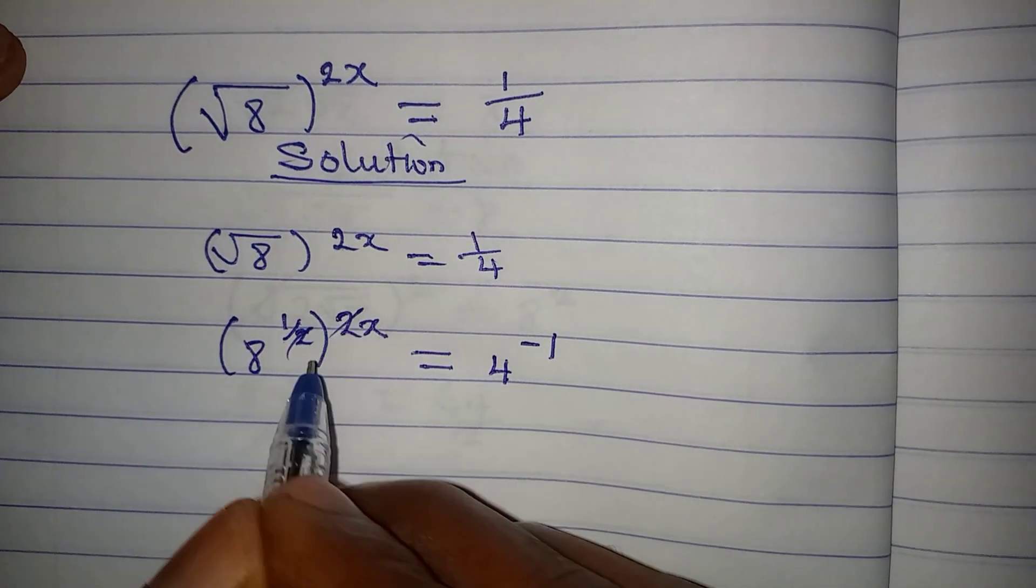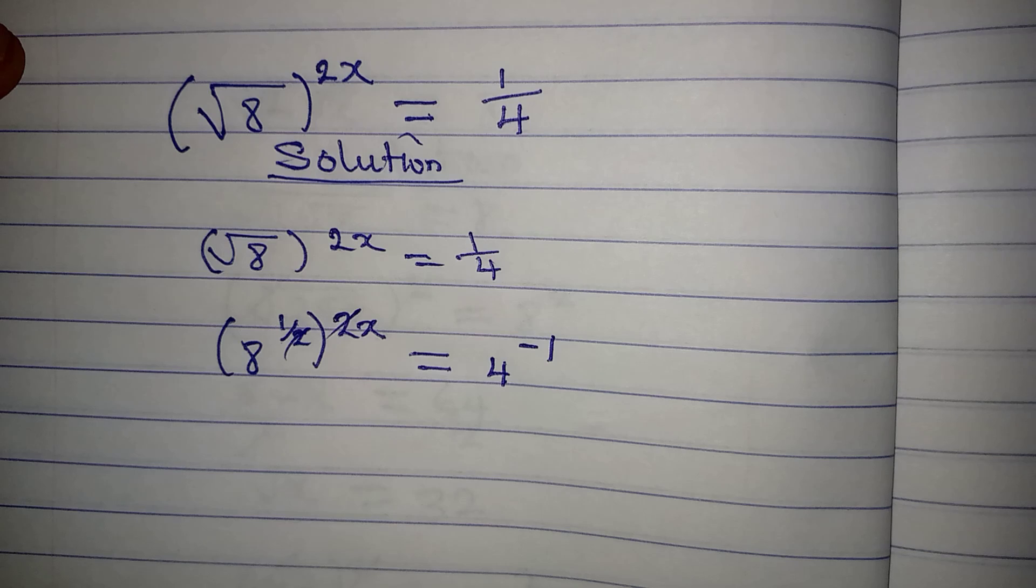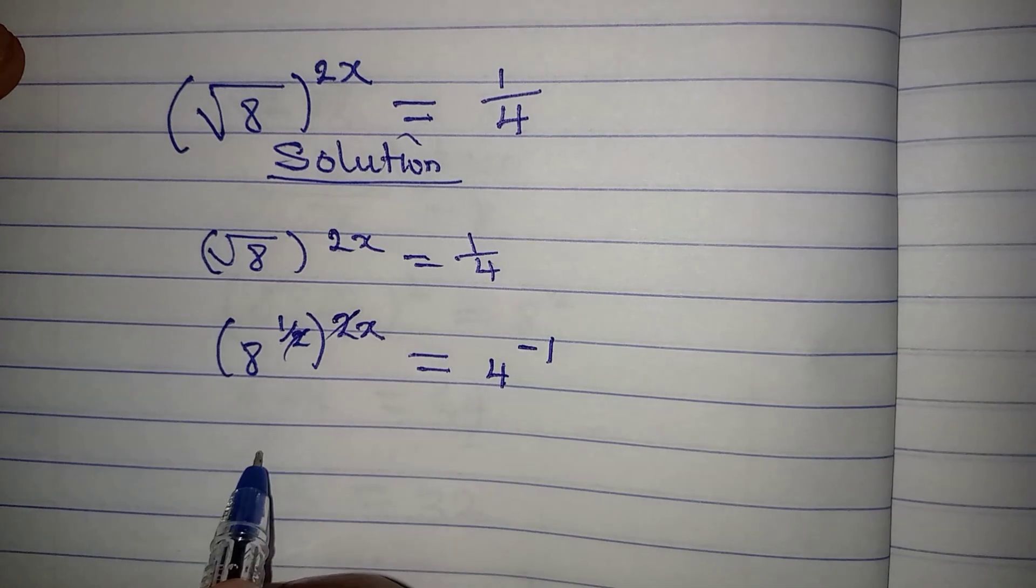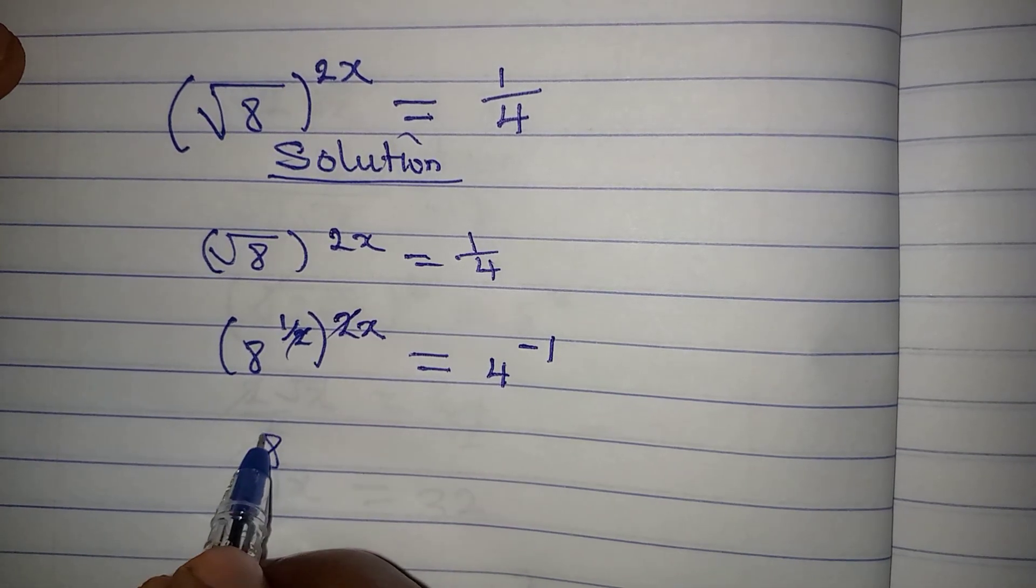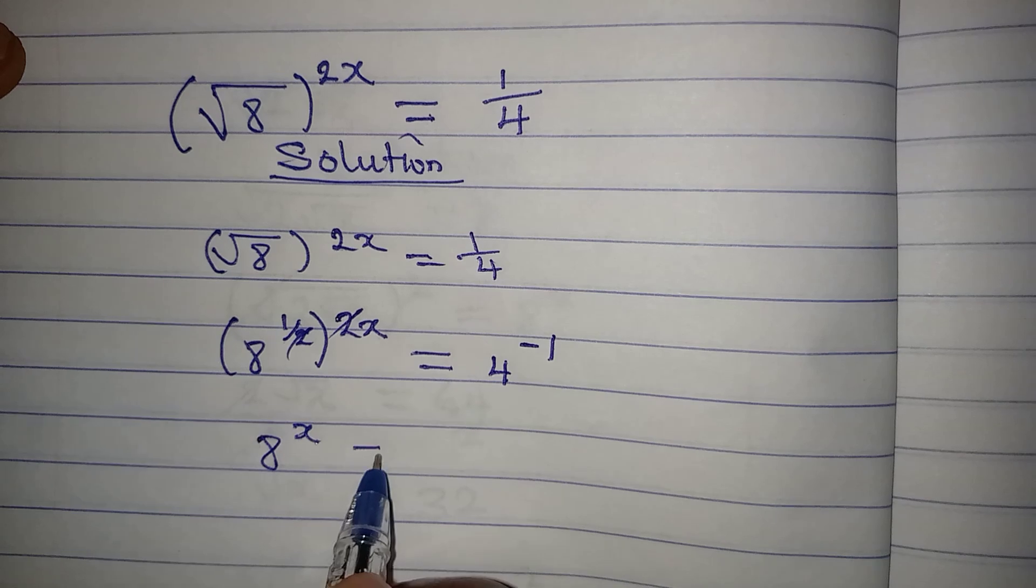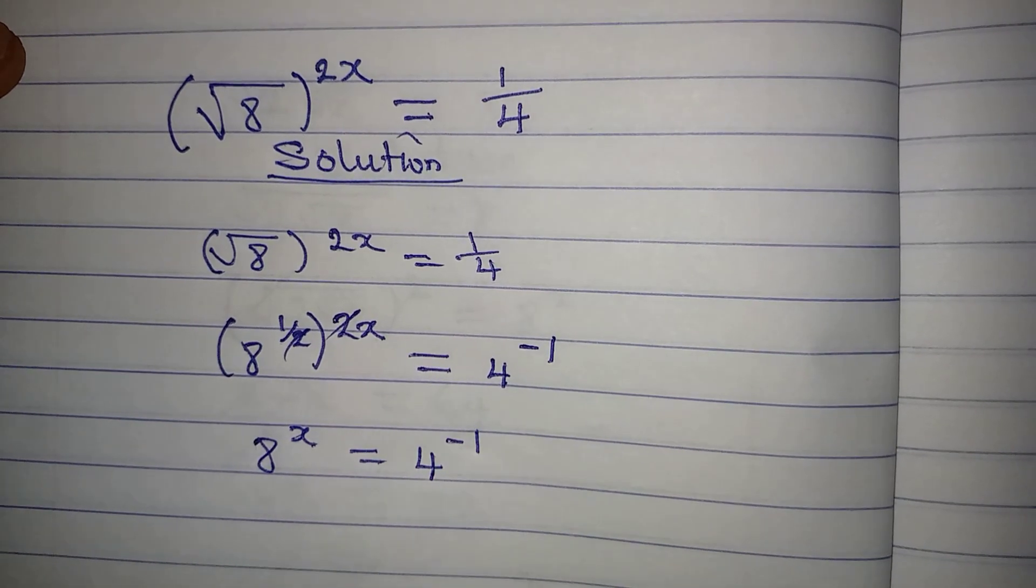Do you know that this can cancel this since we have to multiply? If you do, that means we are having 8 to the power of x being equal to 4 to the power of negative 1.